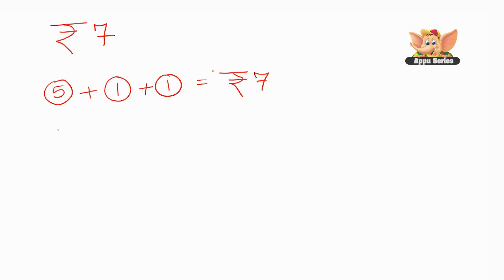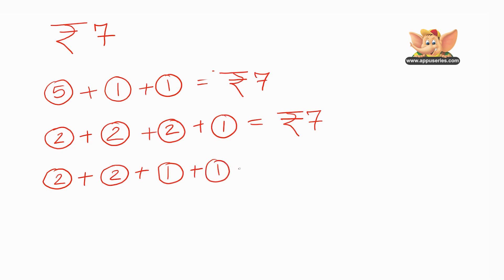Now, let's try another combination. Let's use the 2 rupee coins: 1 two rupee coin, another 2 rupee coin, and another. Another combination would be a 2 rupee coin, plus another 2 rupee coin, plus 1 rupee, another 1 rupee, plus another 1 rupee, that also gives us the same answer: 7.